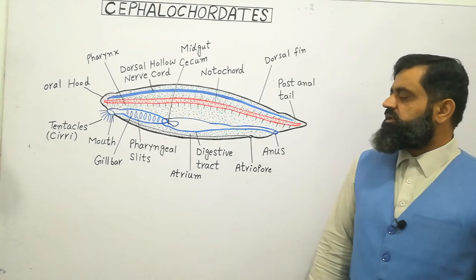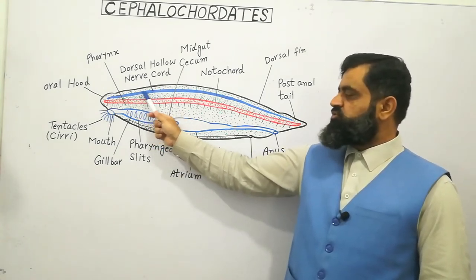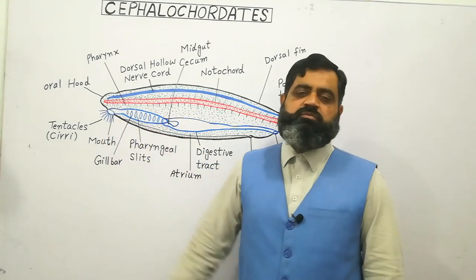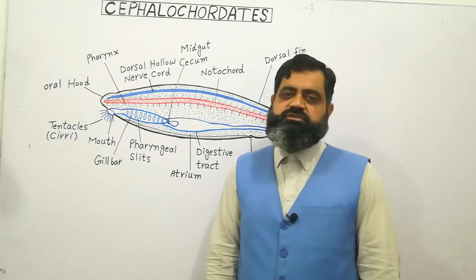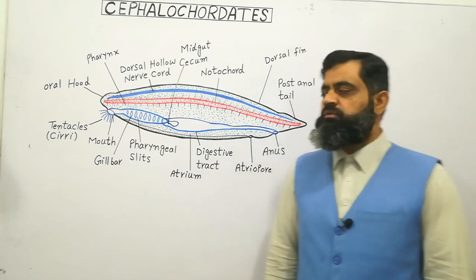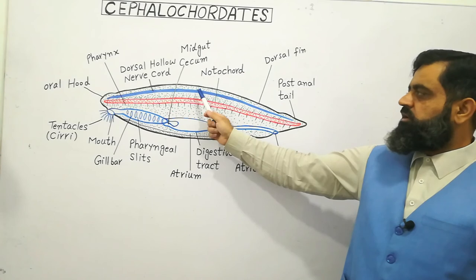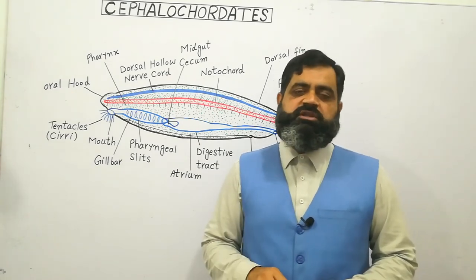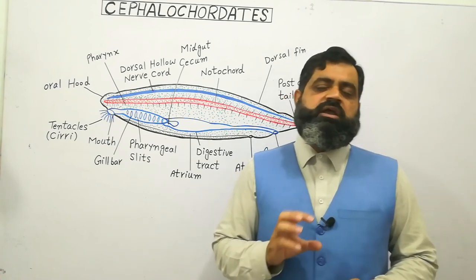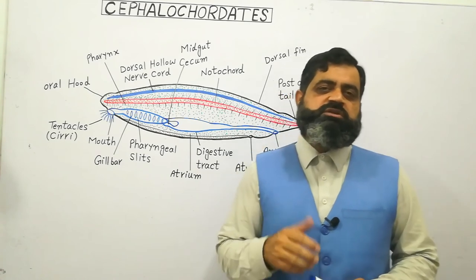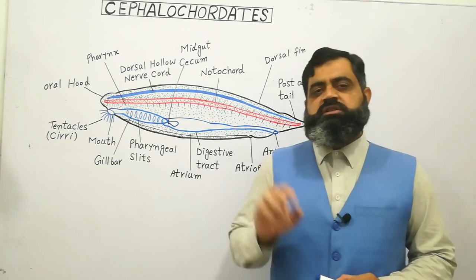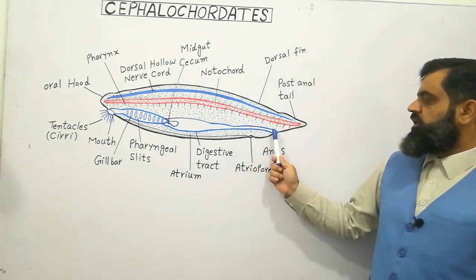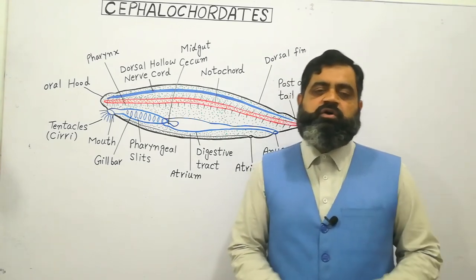If we look at the nervous system, it is dorsal and hollow, as you can see in the blue diagram, and it helps in the coordination and proper functioning of the body. The dorsal hollow nervous system expands a little at the anterior side and forms a brain-like structure that helps in the coordination of body movements. Just below it there is a rod-like notochord made up of vacuolated cells filled with proteinaceous material. The notochord stiffens the body and helps maintain its shape. These animals also contain dorsal and ventral fins, as well as a post-anal tail which helps in locomotion.